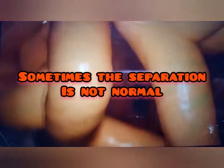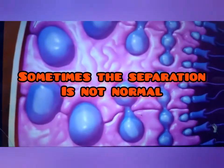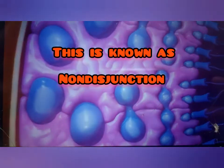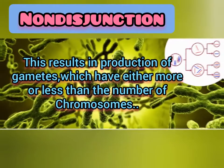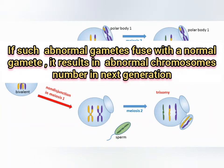Sometimes the separation is not normal, and it is known as non-disjunction. This results in the production of gametes which have either more or less than the normal number of chromosomes. If such abnormal gametes fuse with a normal gamete, it results in an abnormal chromosome number in the next generation.